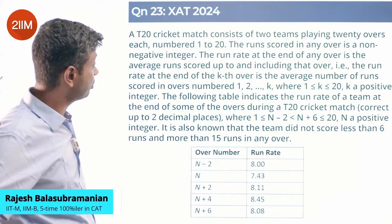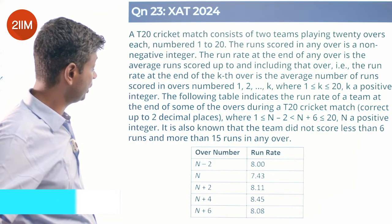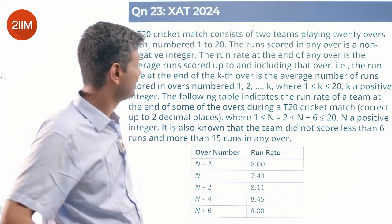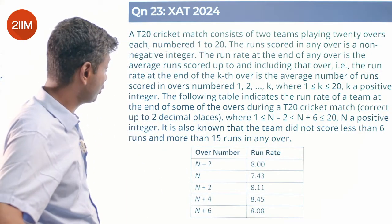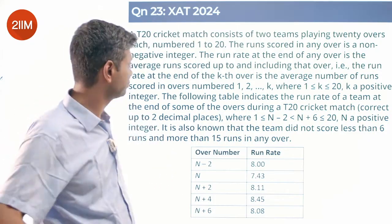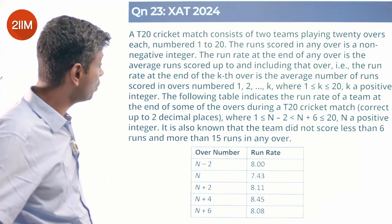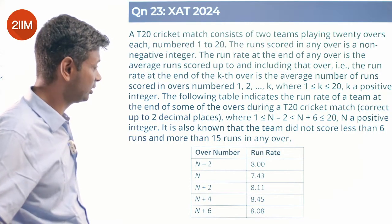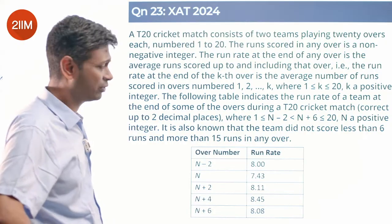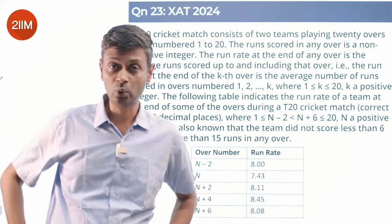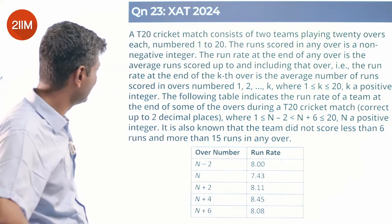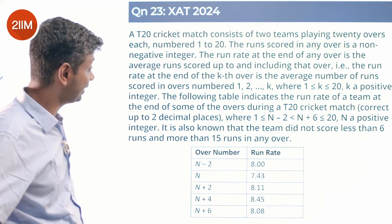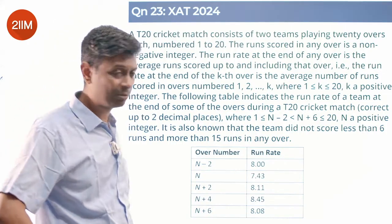A T20 cricket match consists of two teams playing 20 overs each, numbered 1 to 20. The runs scored in any over is a non-negative integer. The run rate at the end of any over is the average runs scored up to and including that over. The run rate at the end of the kth over is the average number of runs scored in overs 1 through k, where 1 ≤ k ≤ 20. The following table indicates the run rate of a team at the end of some overs during a T20 match, given to two decimal places.